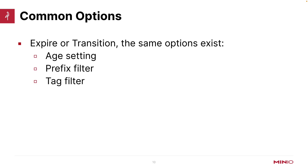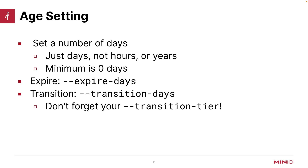Whether you're using expire or transition, some common options exist between both of them so you can understand which objects are going to be impacted by your lifecycle management rules. The age setting allows you to expire or transition objects after a certain time. There's also a prefix filter and a tag filter that you can use — these all determine which objects are impacted by the rule. The age setting is always in days — not hours, not minutes, not seconds, not years or weeks. It's only days, and you just give it a number.